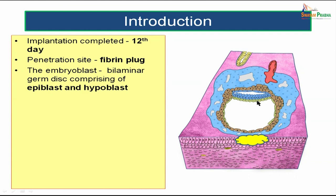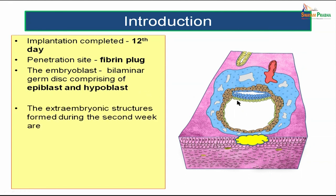The bilaminar germ disc has an epiblast made of tall columnar cells, and a hypoblast — the lower layer — made up of cuboidal cells. So the embryoblast gives rise to a bilaminar germ disc composed of epiblast lined by columnar cells and hypoblast made up of cuboidal cells. That is what happens to the embryoblast during the second week of intrauterine period.